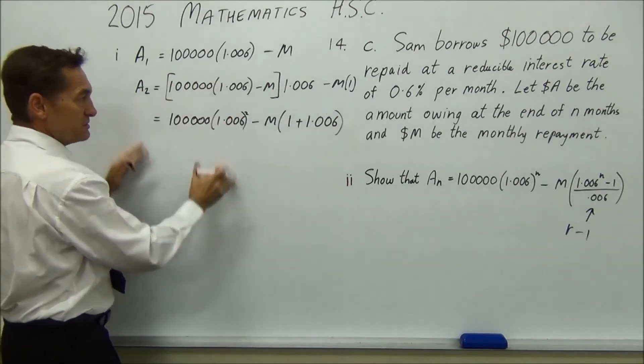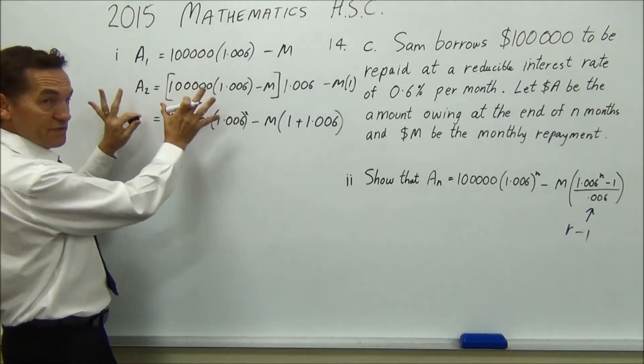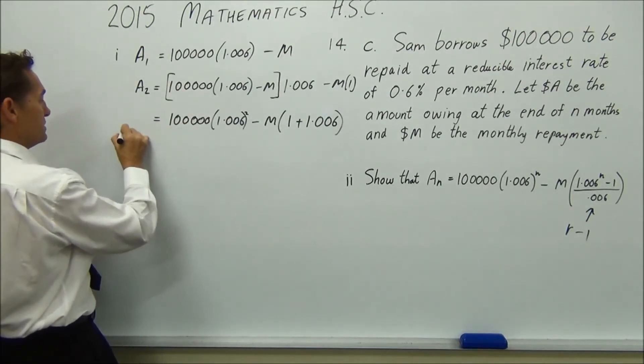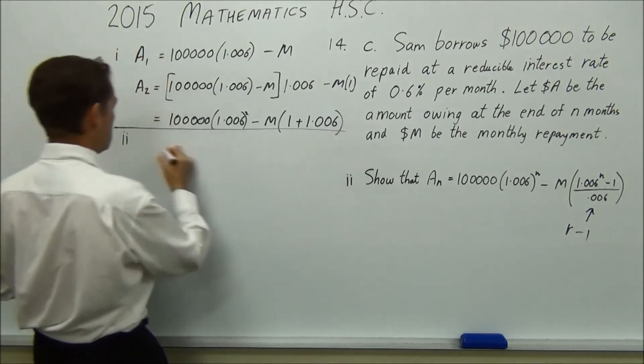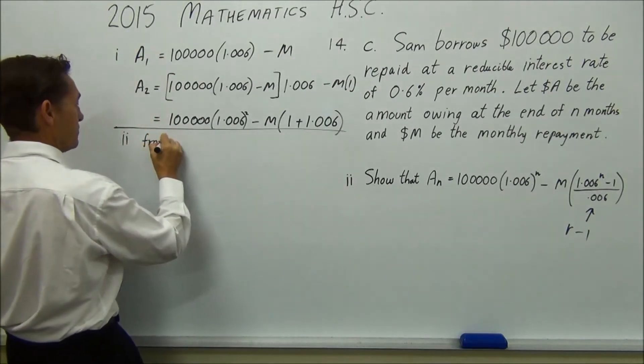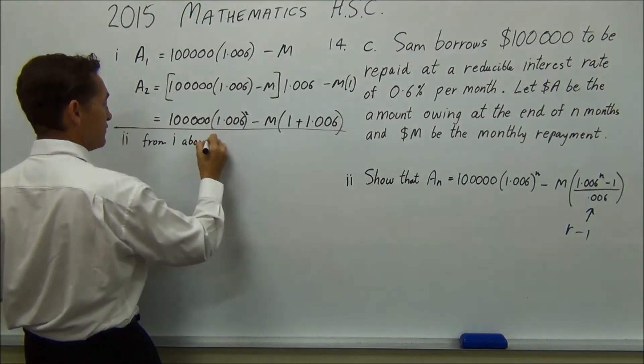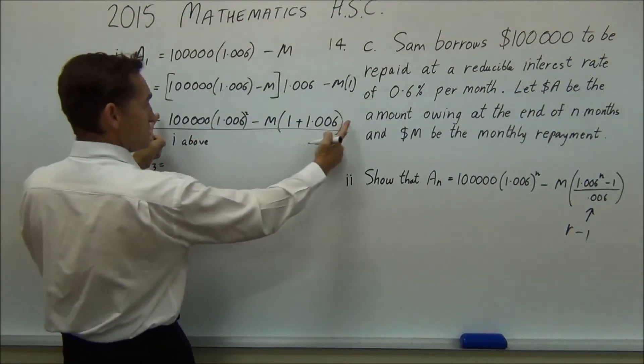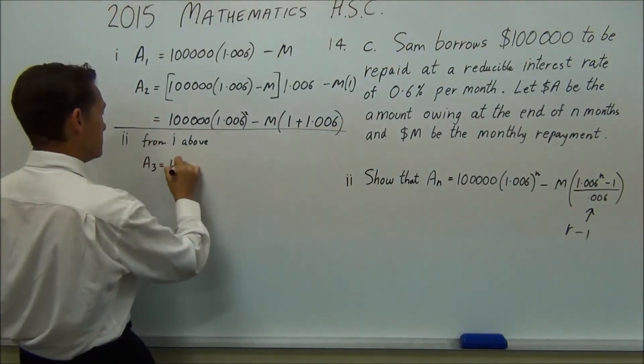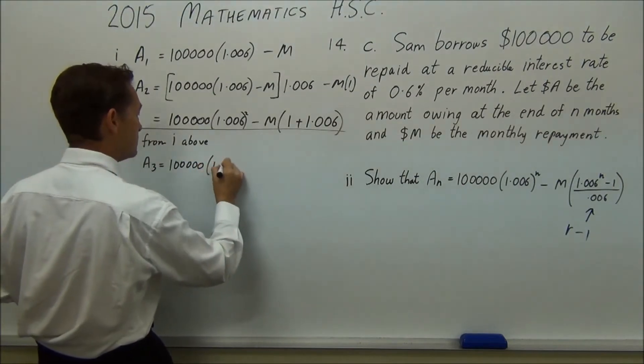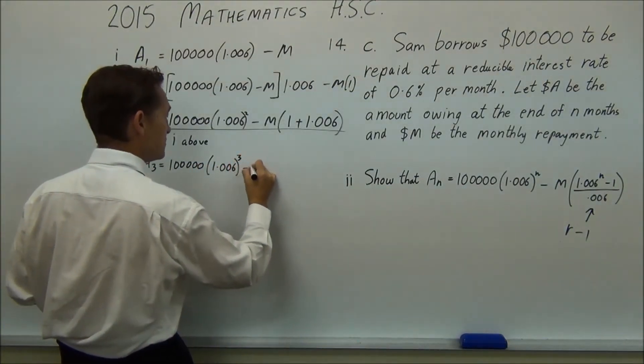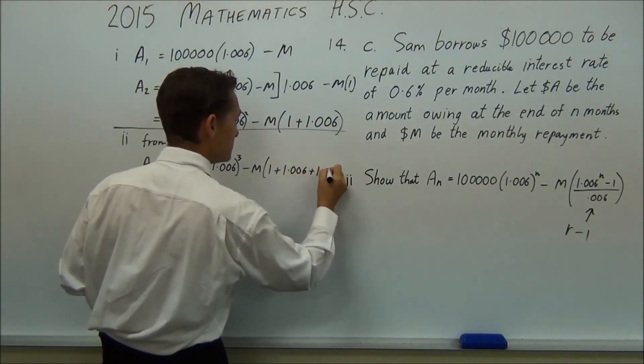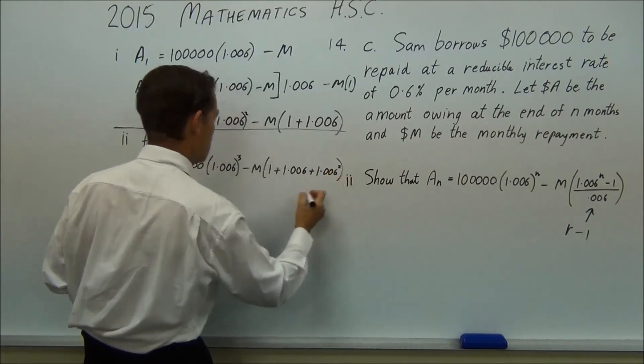From here, I would just continue on, since you've written this in part 1, and I've left that up. I would continue on in my part 2. So, for this, if this was my exam paper, I'd be going part 2, dot dot. Put a line, and go from 1 above, just continue that down. So you've got A2, A3 equals, keep this pattern and just go 100,000 times 1.006 cubed minus M times 1 plus 1.006 plus 1.006 squared and etc.